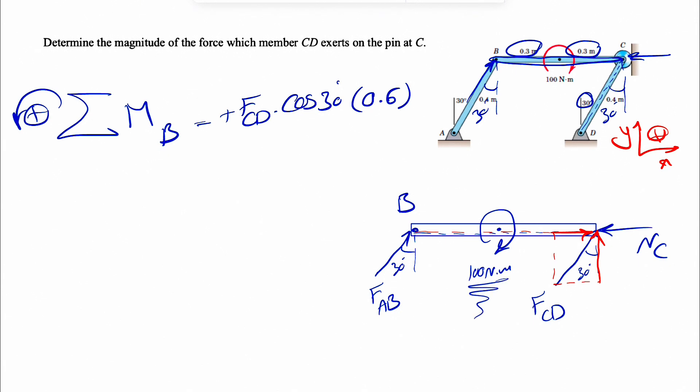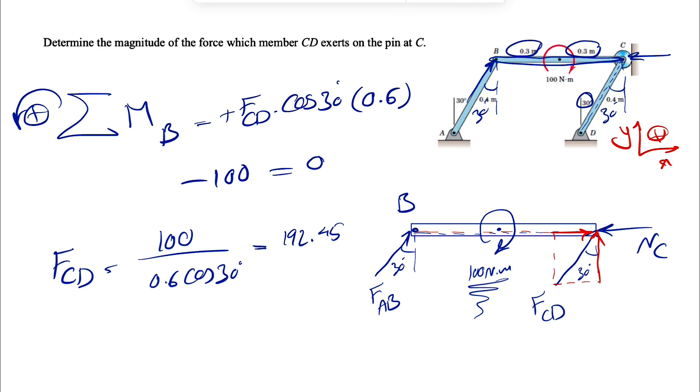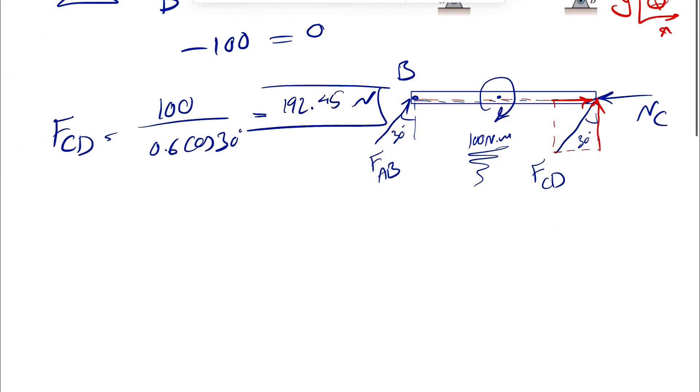We also have the clockwise moment that is applying at the center of this beam. So FCD here will be 100 divided by 0.6 cosine of 30 degrees. This is going to give us 192.45 newton meters—sorry, newtons. We have a force. This will be 192.45 newtons.